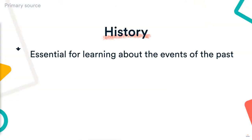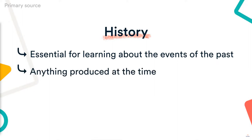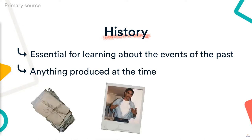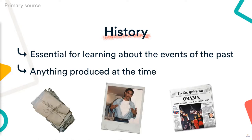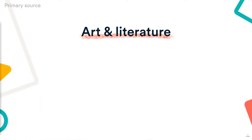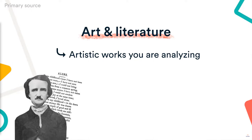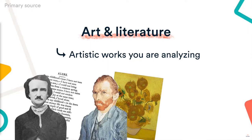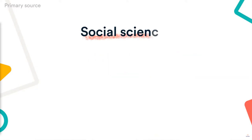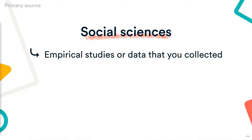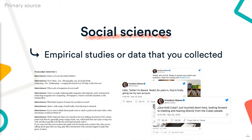In history, primary sources are essential for learning about the events of the past. They can be anything produced at the time, such as letters, photographs, newspapers, and official records. In art and literature, your primary sources are the artistic works you're analyzing — for example, poems, paintings, or films. In the social sciences, primary sources are usually empirical studies or data that you collected yourself, anything from interview transcripts to social media posts.